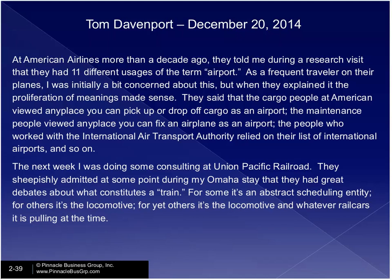The next week Davenport was consulting at Union Pacific Railroad, where they sheepishly admitted they had great debates about what constitutes a train. For some it's an abstract scheduling entity; for others it's a locomotive; yet for others it's a locomotive and whatever rail cars it's pulling at the time. The question is, when you use data out of context because you don't have the traceable context, you've got to be a little careful. I believe enterprise architecture is going to address this.